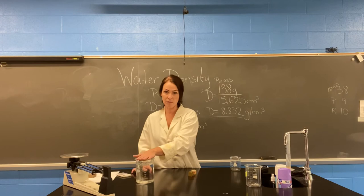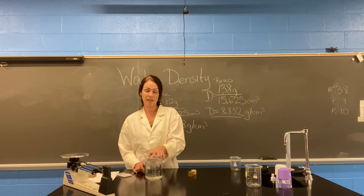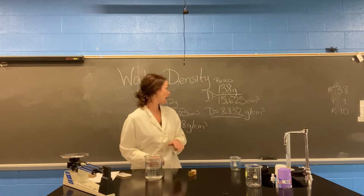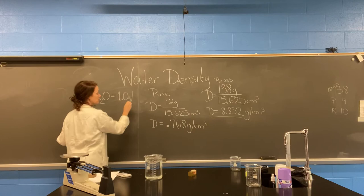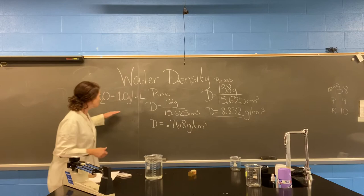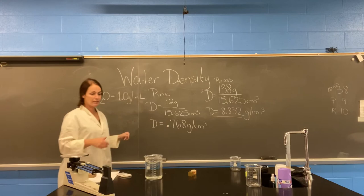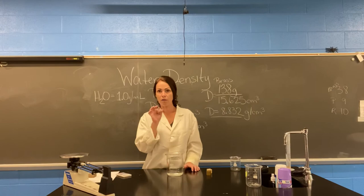If we want something to sink, it has to be more dense than the water it's in. The density of pure water — H2O — is always 1.0 grams per milliliter. A milliliter is the same thing as a cubic centimeter; one's a liquid and one's a solid. So water has a density of one, meaning one cubic centimeter of water has a mass of one gram.